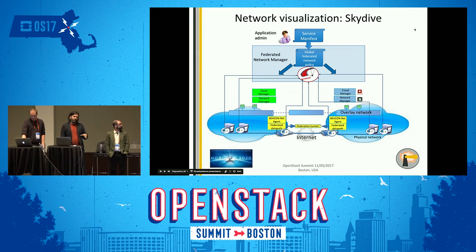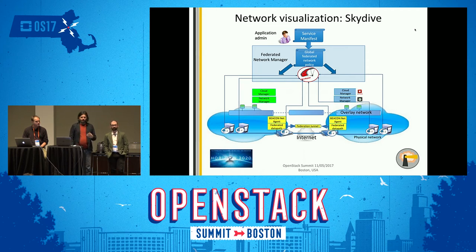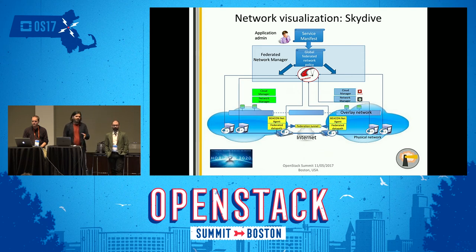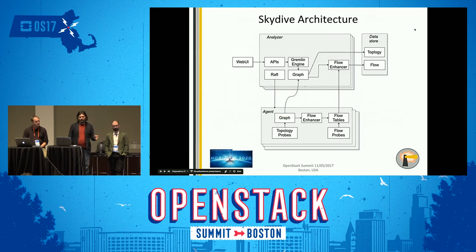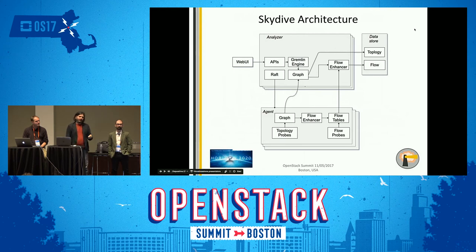Getting back to networking, another important topic is having tools to debug and troubleshoot networks — specifically, networking visualization. There is a project called Skydive with connectors for OpenStack. The BEACON project has extended this tool. We have the analyzer and a number of agents deployed on hosts and networking elements. The architecture features a graph processing engine, a graph description language, ways to capture flows, and the ability to enrich those flows to make some kind of detections.